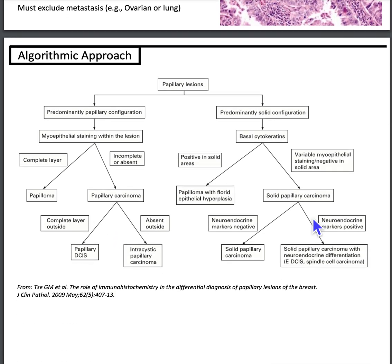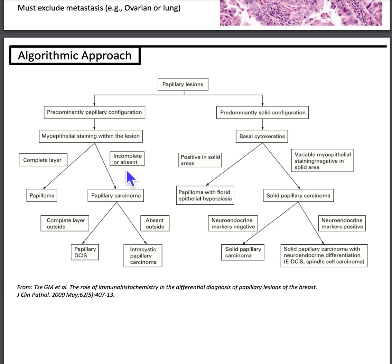Here is an algorithmic approach from Saygm et al. If you see a papillary lesion in the breast, first determine if it's predominantly papillary or predominantly solid. If solid, do basal cytokeratins: if positive within the solid areas, it's papilloma with florid epithelial hyperplasia; if not, it's solid papillary carcinoma. If it's predominantly papillary, do myoepithelial staining within the lesion: if complete, it's intraductal papilloma; if incomplete or absent, think papillary carcinoma. If there's a complete layer on the outside, it's papillary DCIS.